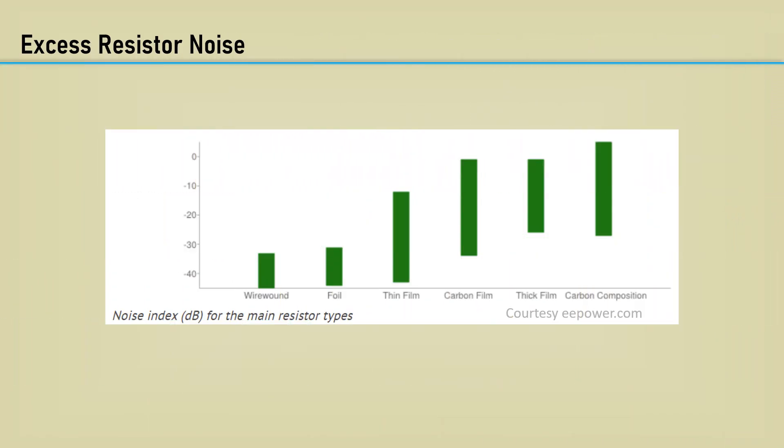The resistor types available have various excess noise above the ideal Johnson noise. Carbon compositions are the worst and practically non-existent in the industry today. Thick film and carbon film are not great choices.